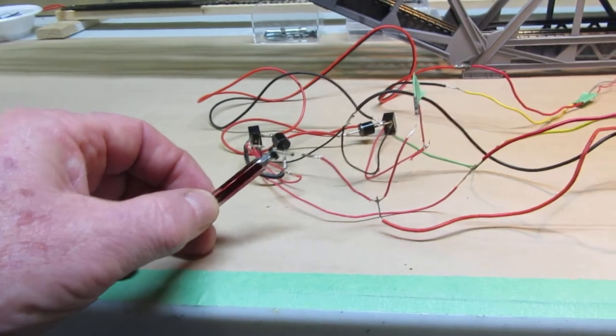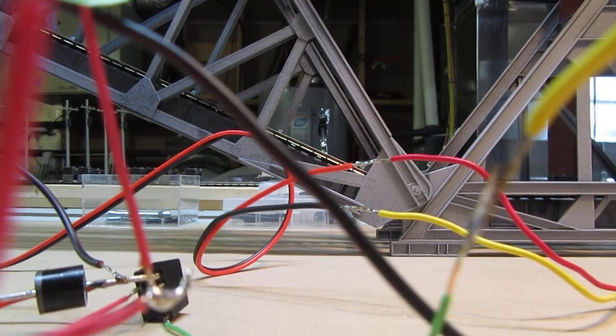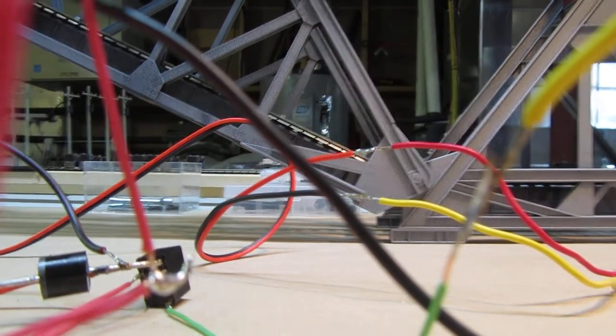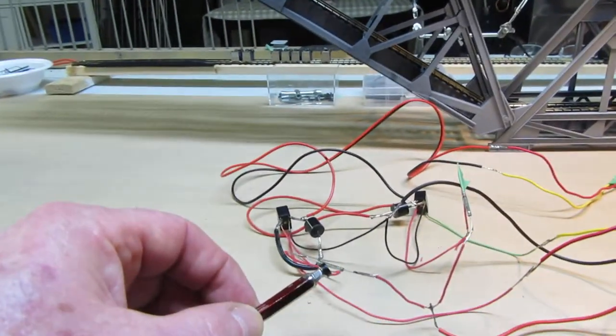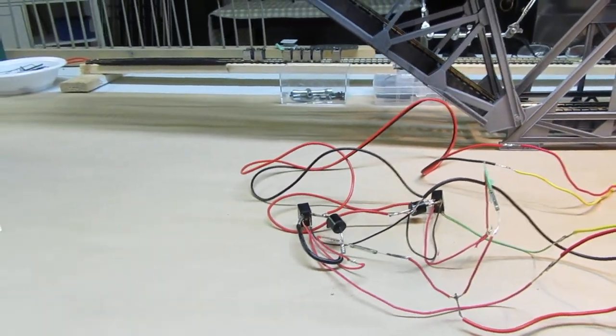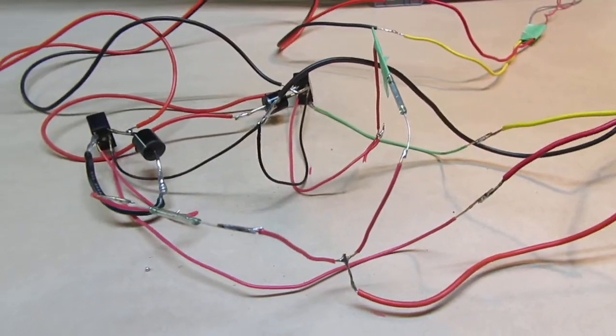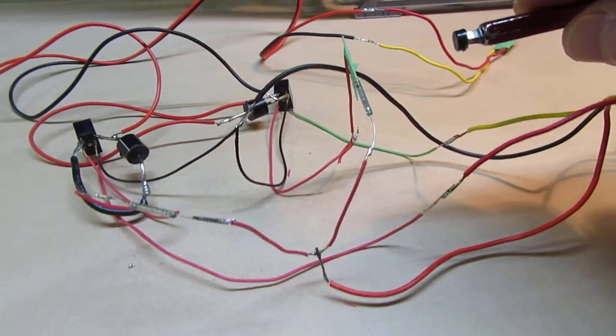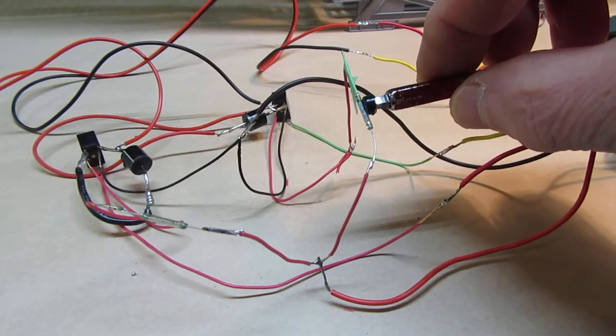Then you reverse the switch and make it go up. Now it's traveling up, the down limit switch magnet moves away. Then when it gets to the up position, there's a second reed switch. I'll bring the magnet in there and it stops again. That's the up limit switch.